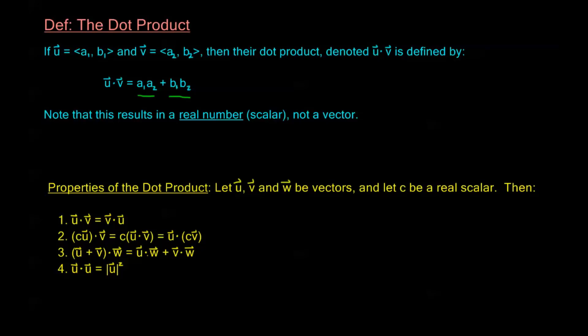We also have the distributive property: if we have the sum of two vectors dotted with another vector, we can distribute the dot product. So u plus v dot w is the same as u dot w plus v dot w. And if w were in front, we'd have w dot u plus w dot v. You can confirm these first three properties by plugging in general vectors u = (a1, b1), v = (a2, b2), and w = (a3, b3) on both sides.